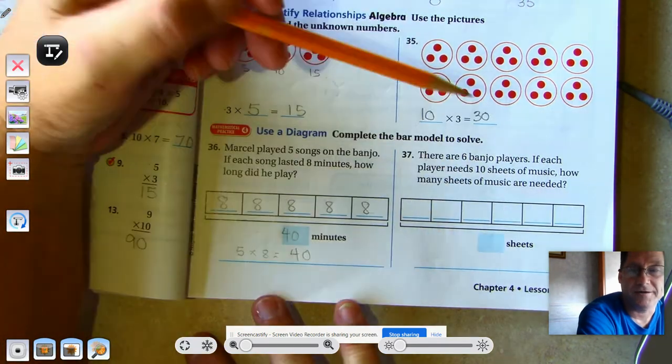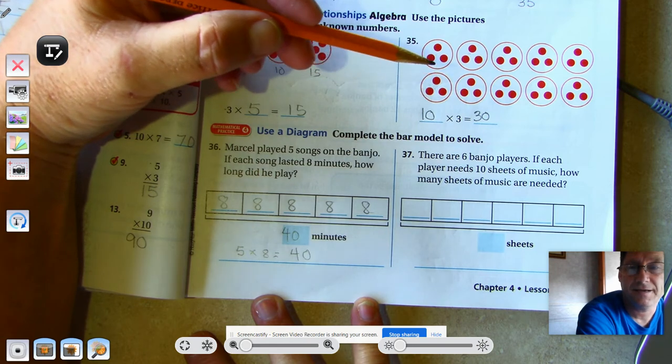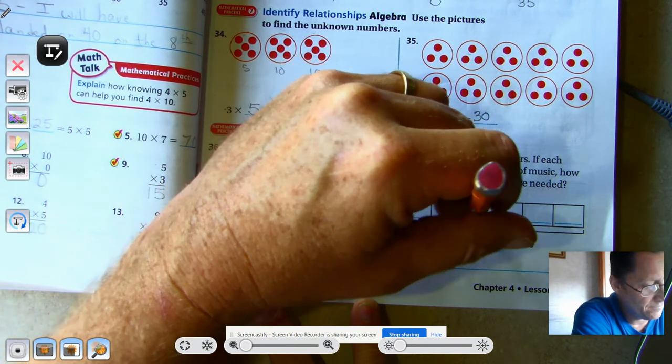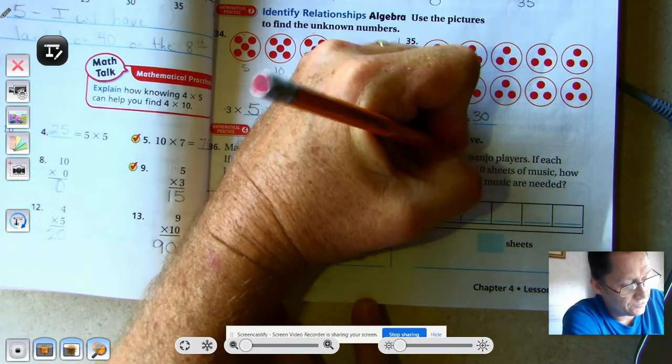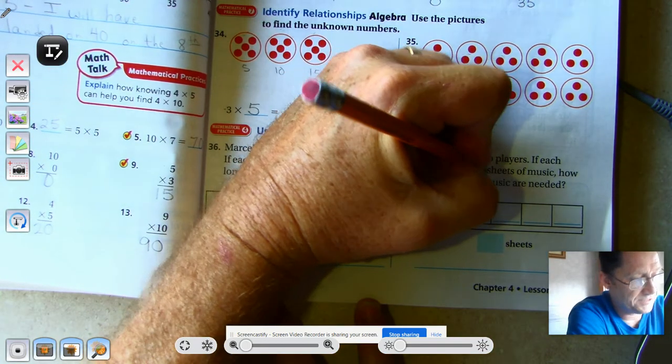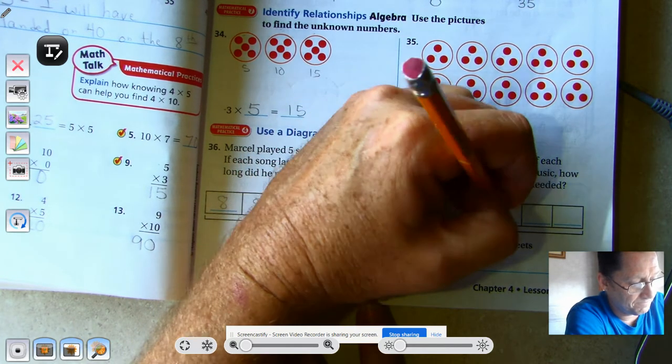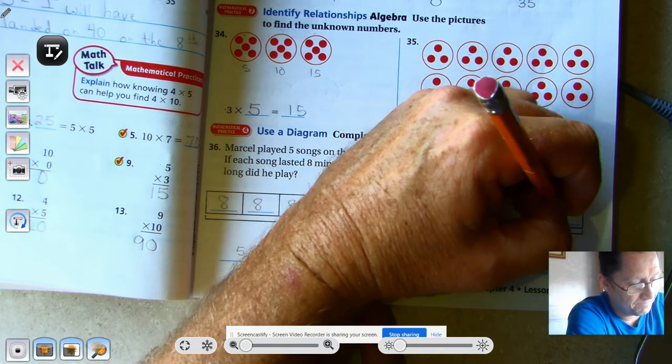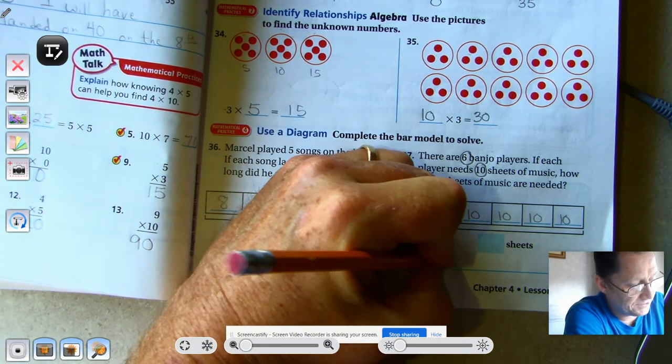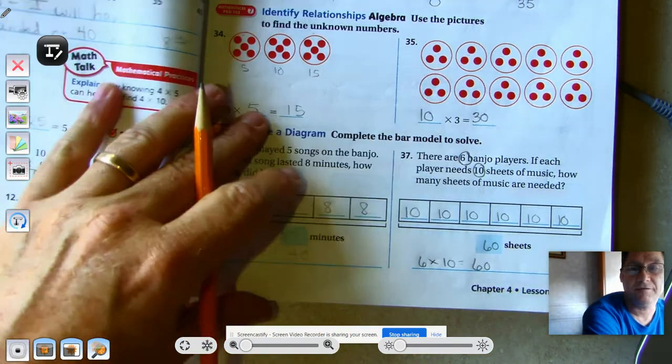There are 6 banjo players. If each player needs 10 sheets of music, how many sheets of music are needed? So again, in our bar model, I see 1, 2, 3, 4, 5, 6. So the 6 boxes represent the banjo players. The 10 sheets of music that they would each have. So 6 players times 10 sheets of paper. They would need a total of 60 sheets of music.